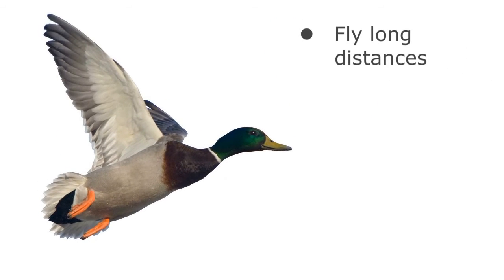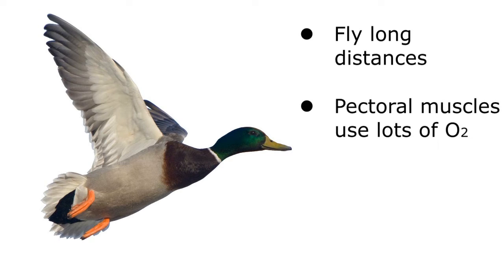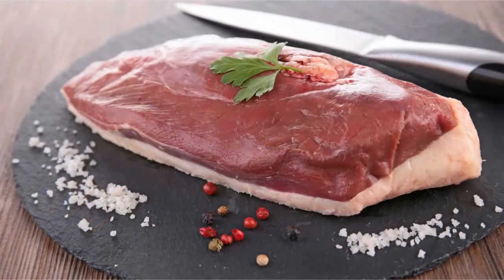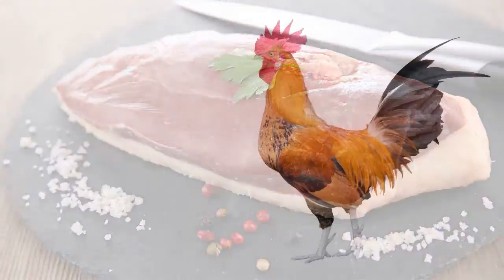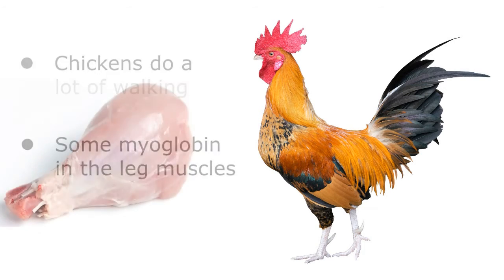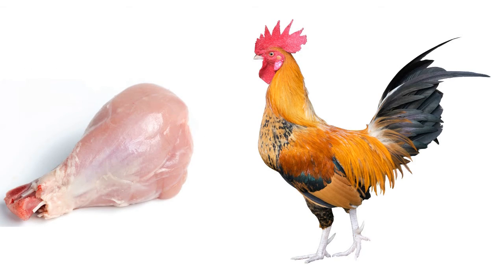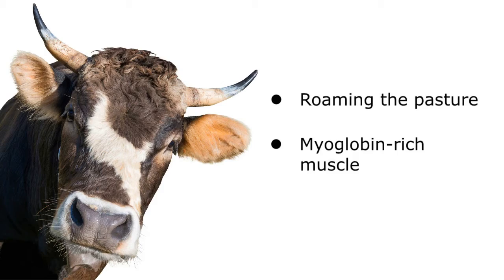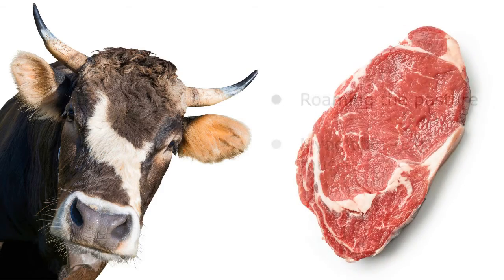Ducks, on the other hand, fly long distances and their pectoral muscles consume a lot of energy and oxygen in the process. The abundant myoglobin in their pectoral muscles gives this meat its reddish hue. Chickens do spend a lot of time walking the farm looking for grubs and bugs, so the muscles of the legs contain myoglobin, providing the familiar dark meat of the drumsticks and thighs. Similarly, beef and dairy cattle spend most of their existence roaming pastures while grazing, and the oxymyoglobin provides both the oxygen reserve and rich redness of a fresh steak.